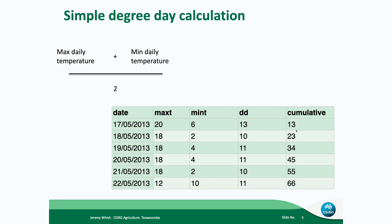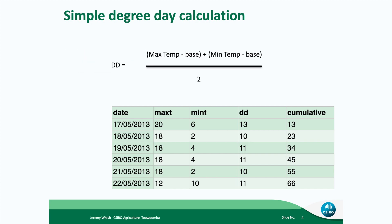Calculating average day degrees is the simplest form, because plants and animals quite often won't grow or develop in colder temperatures. For some specific plants you will end up having a base temperature, and this is just a floor to the amount of temperature that is accumulated. But we'll talk about that a little bit more.